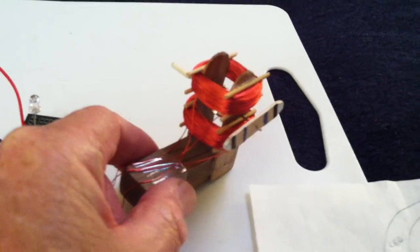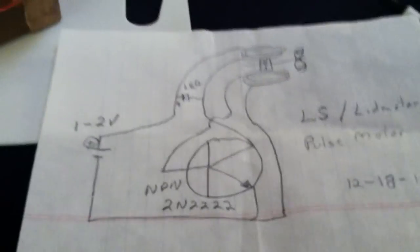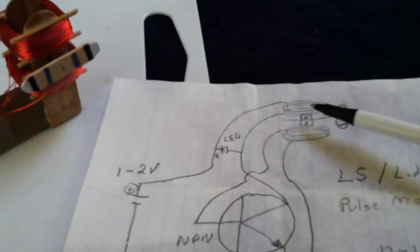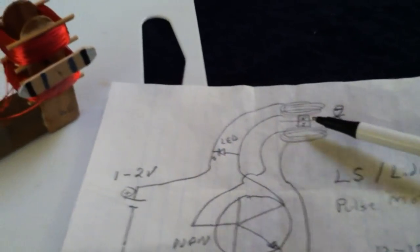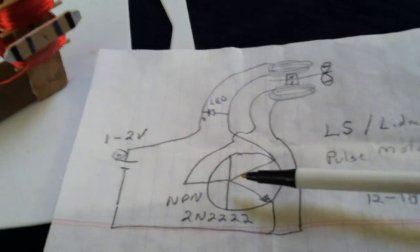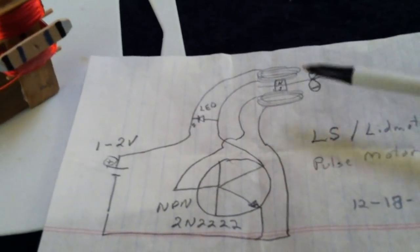He used my super simple electronic pulse motor circuit that just uses an NPN transistor, a couple of coils of wire between a rotating north-south magnet. The trigger coil tells the transistor to turn on, which turns on the drive coil, which turns the rotor.